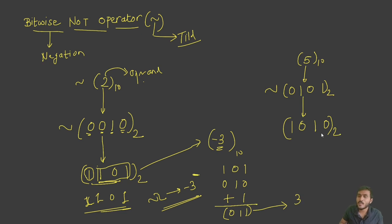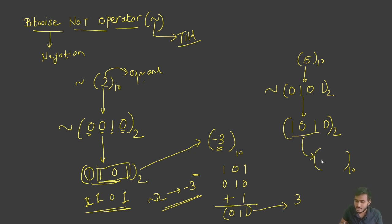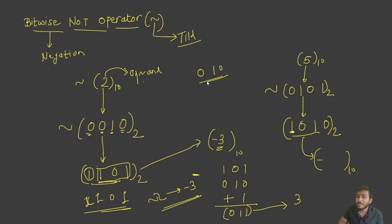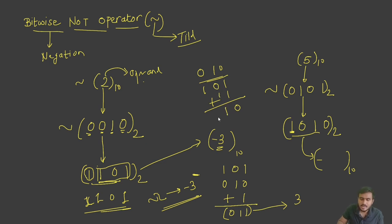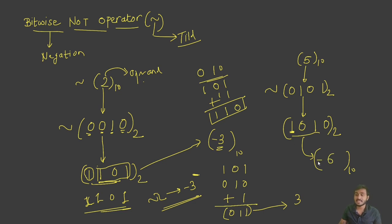We now convert 1 0 1 0 to decimal. The first bit is 1, so the sign is negative. We use the remaining bits 0 1 0 to find the value. Apply one's complement to get 1 0 1, then add 1 to get 1 1 0. Converting 1 1 0 to decimal gives 6, and with the negative sign the answer is minus 6. So negation of 5 is minus 6.